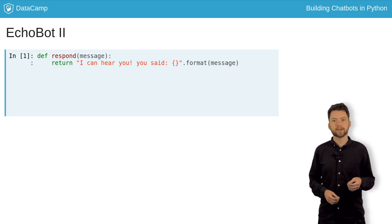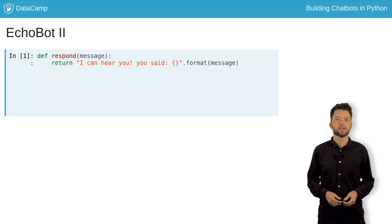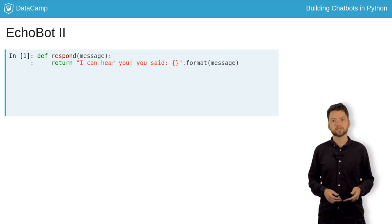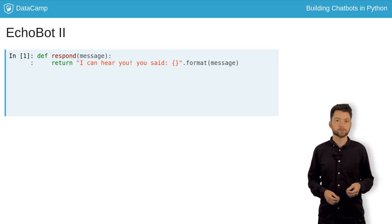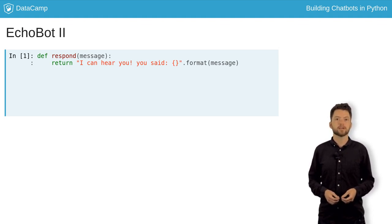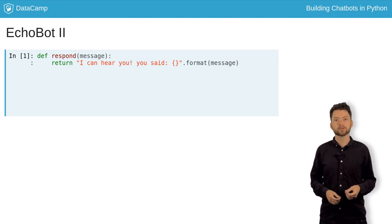We specify the output generated by the function using the return keyword. If a function doesn't have a return statement, that means it returns None. One way we can insert variables into a string in Python is by using the string's format method. Inside the response function is a string containing curly brackets. These act as placeholders, and will get replaced by the value of the argument we pass when we call format.